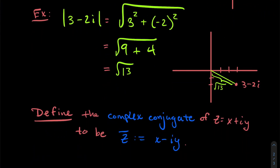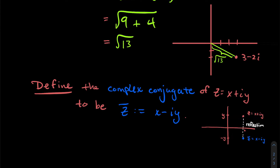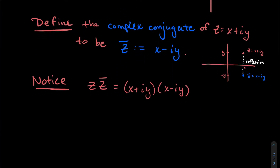Let's define the complex conjugate. The complex conjugate of x + iy is x − iy. The notation is z̄ (z bar) for the conjugate of z. You take the imaginary part and give it the opposite sign. Geometrically, this amounts to a reflection over the real axis — the point x + iy reflects to x − iy.